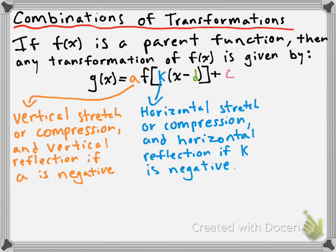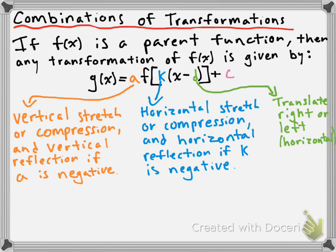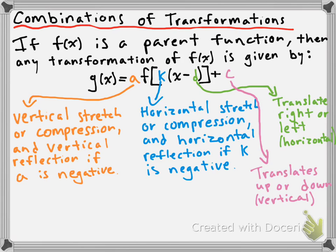The d and c values basically do the same sort of thing as before. The d value translates the function left or right — those are horizontal translations. For example, if you saw x minus 3 in your equation, you know you're going to have a horizontal translation to the right 3 units. And the c value translates the function up or down — vertical translations. So if at the end of your function you see a plus 5, the function has been translated 5 units up.